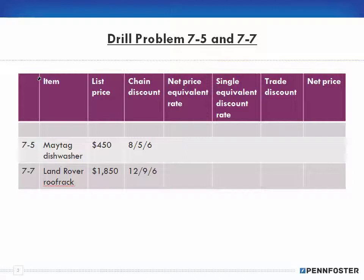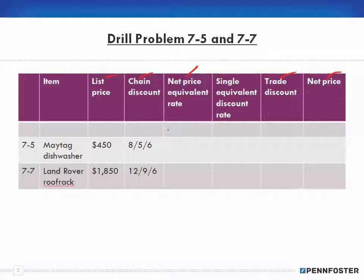Really, all I needed for these problems was the list price, chain discount, trade discount, and net price. I need to calculate the net price equivalent rate in order to figure out the trade discount and net price. These problems are basically the same as 7-1 and 7-3, so I'll work right through them without spending time on theory. For 7-5, my chain discount is 8, 5, and 6.